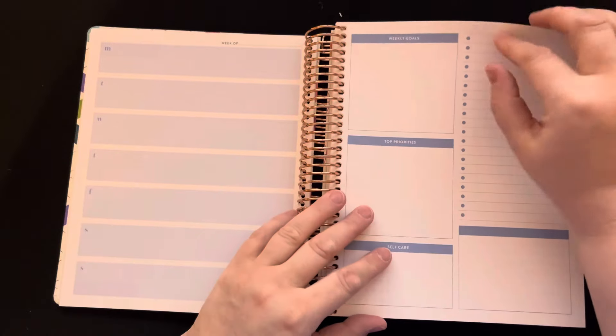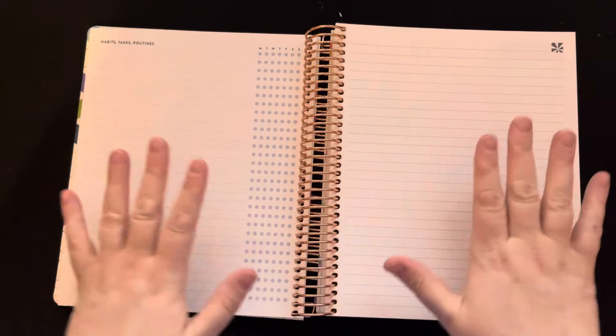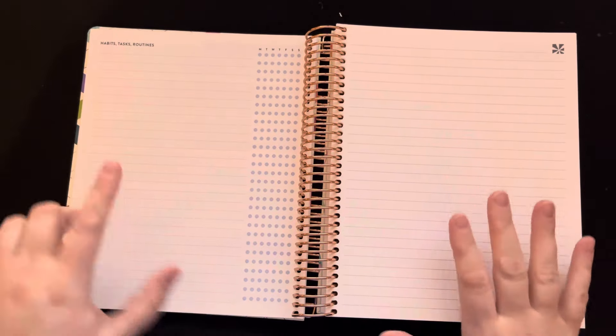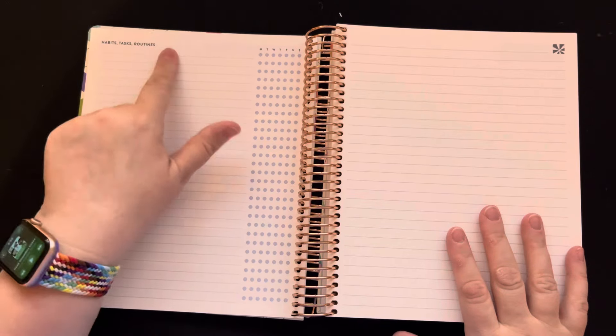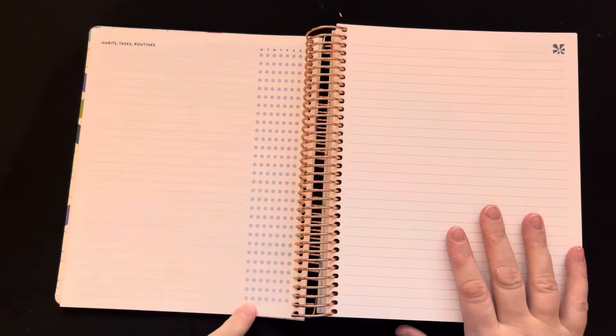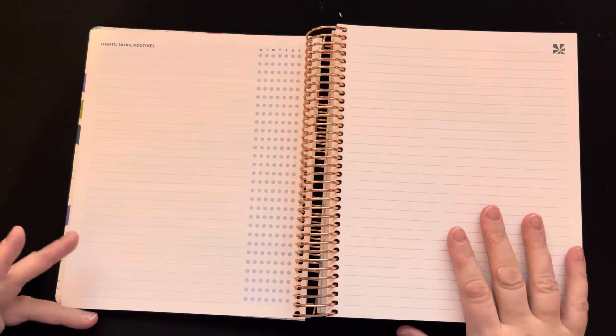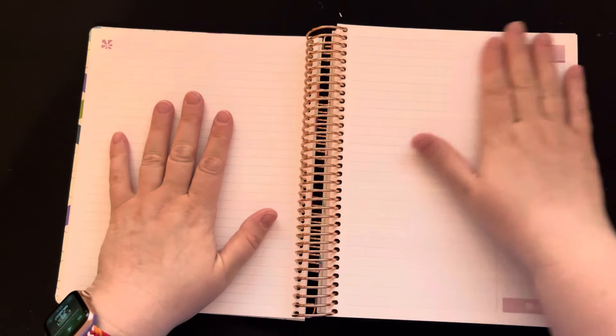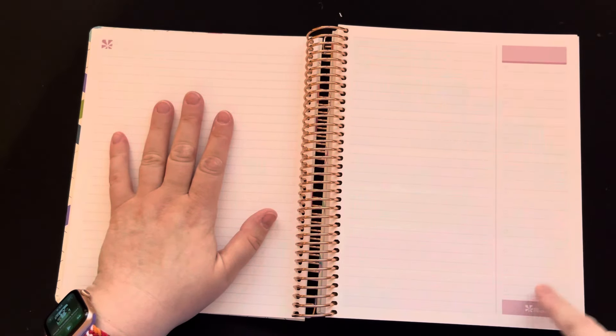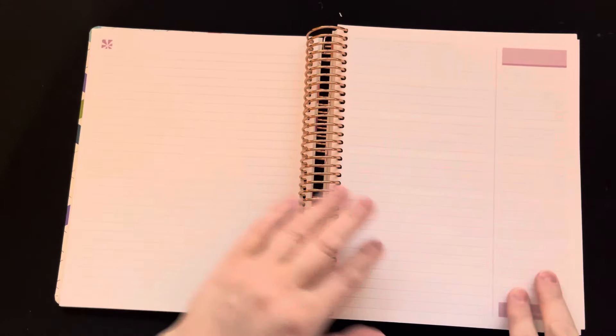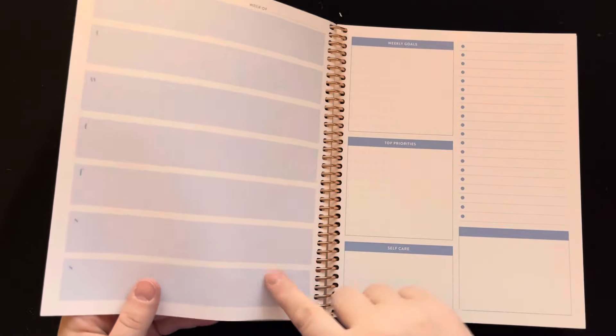But then that's not it for the week. So you actually have another spread for that week. This is habits, tasks, and routines. It says there's a Monday through Sunday. So you could put habit tracking and then a blank page. And then there's a third chunk for that week, another notes page and a productivity page where it's like notes here and then task list here. And then you start into the next week.